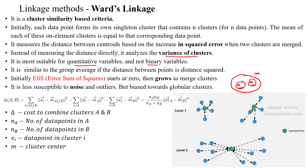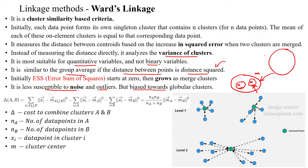Ward's linkage is similar to average linkage if the distance between data points is squared. It handles noise and outlier data points more easily compared to the other four linkage methods — minimum distance, maximum distance, centroid, and average distance. However, it is biased toward globular clusters, meaning its aim is to combine all data points into bigger clusters. Starting from singleton clusters, it keeps merging data points toward one large globular cluster.